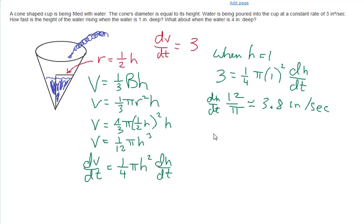If we repeat that same thing for when the height is at 4 inches, we get 3 equals (1/4)π. And now we have 4² dh/dt.